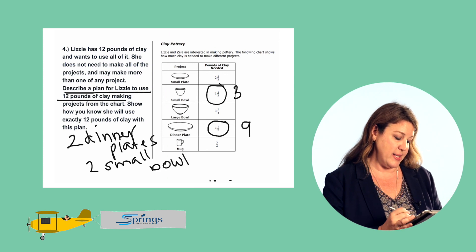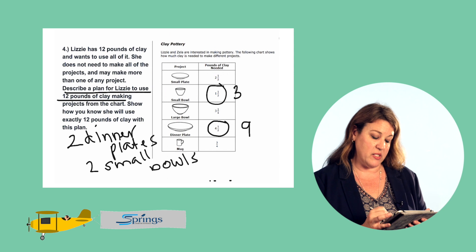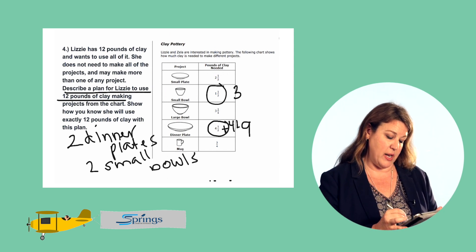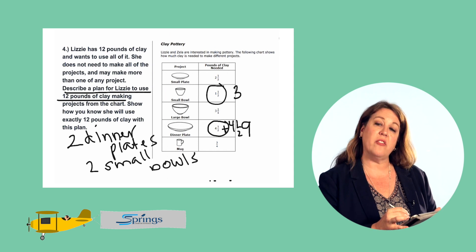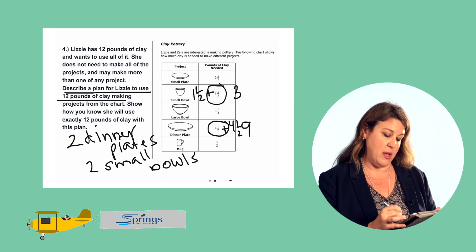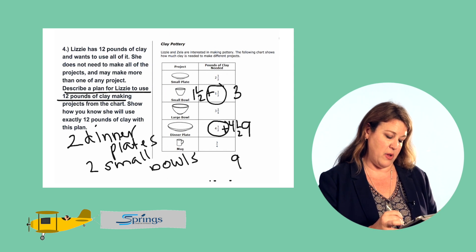And we know that it's exactly 12 because four and a half plus four and a half is equal to nine. And one and a half plus one and a half is equal to three. And nine plus three is equal to 12.